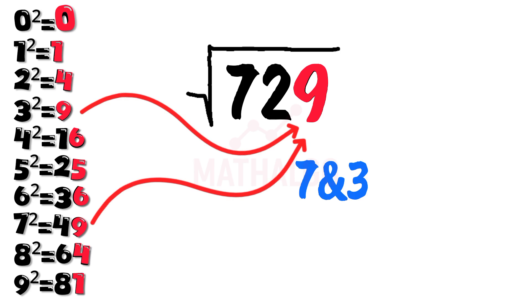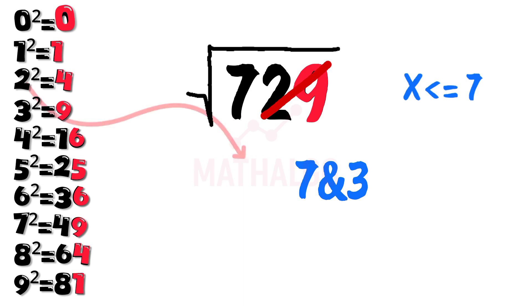So both 3 and 7 could be part of the answer. Now, like before, cross out the last two digits. We're left with 7. Look again at our list of square numbers. What's the biggest square less than or equal to 7? That would be 4, which is 2 squared.